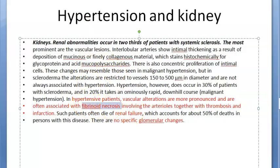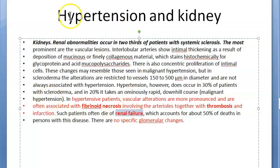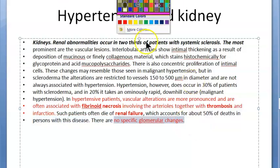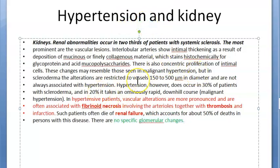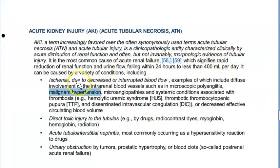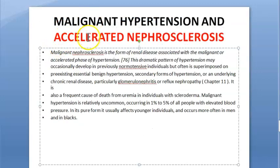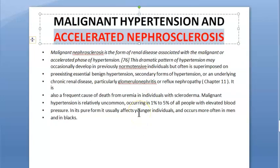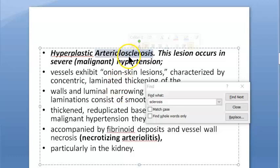In the exam you will write fibrinoid necrosis and thrombosis, which can lead to renal failure. There is no specific glomerular change according to Robbins Pathology, but there will be proteinuria — the person is losing protein in the urine. Acute kidney injury occurs in malignant hypertension, and this is called accelerated nephrosclerosis. The term arteriosclerosis is also used in this context.